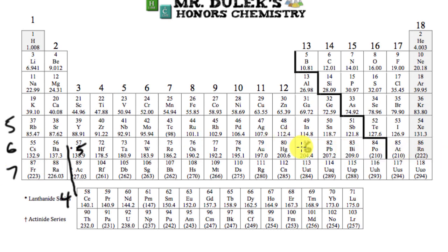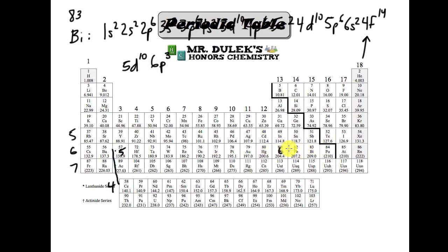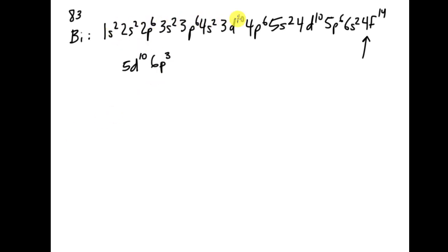I'm going to end on 6p — 1, 2, 3. So just by looking at the periodic table, I can figure out that the last configuration is 6p³. All those exponent numbers should add up to 83 electrons. Could you imagine doing all of this with orbital diagrams, boxes, and arrows? Nobody wants to do that. Even this written-out form is long and tedious. So that leads us to the abbreviated version.